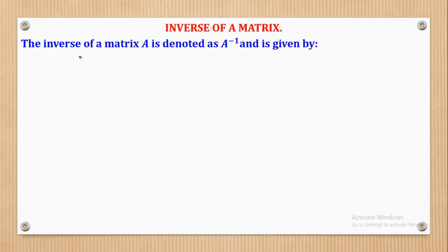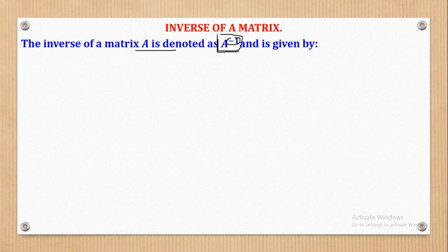The inverse of a matrix A is denoted by A to the power of negative 1. Each time you see this symbol — A to the power of negative 1 — as long as there's a power of negative 1 in matrices, that means inverse of that matrix. If it is B to the power of negative 1, that is inverse of matrix B; if it is A to the power of negative 1, that is inverse of matrix A.